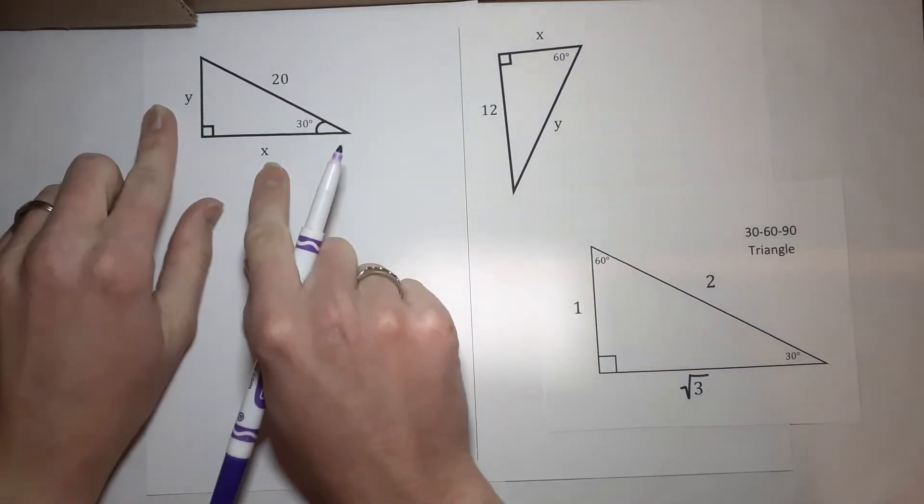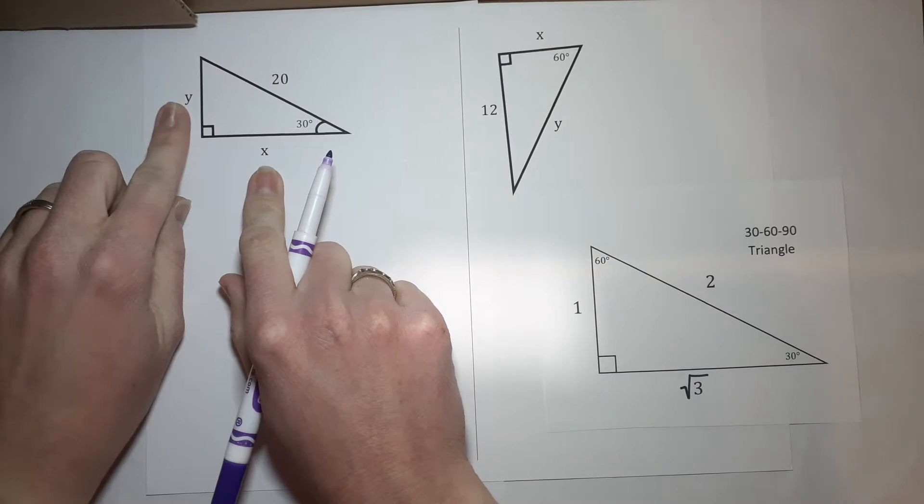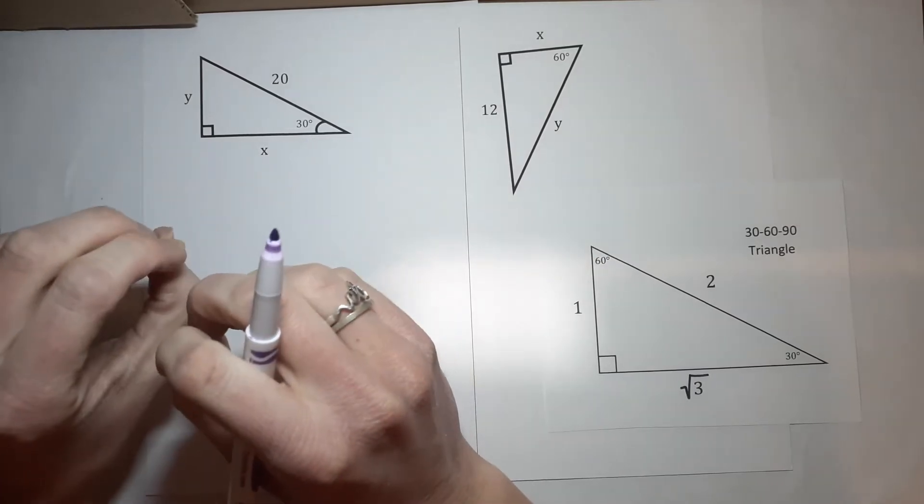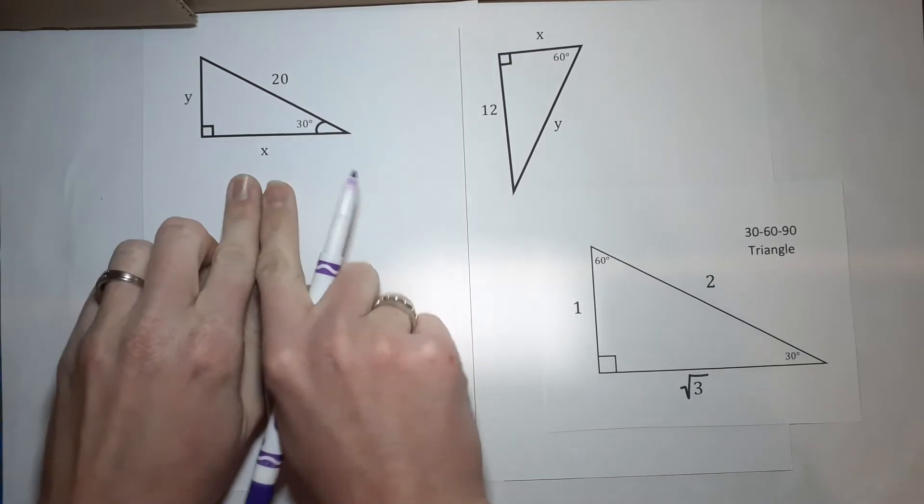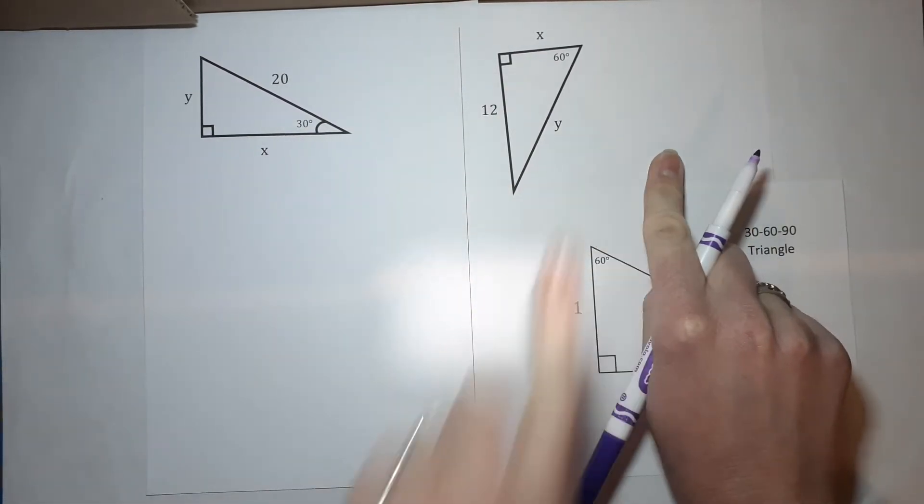Here we are looking for both X and Y. There's a couple ways you could do this. I'm going to show you one way here, the other way here.